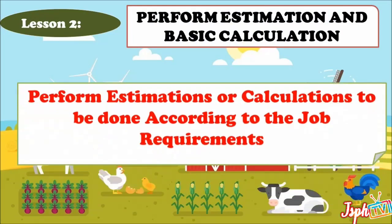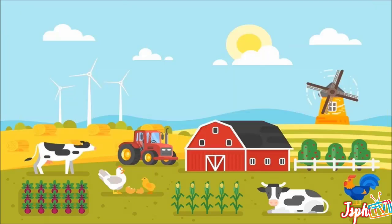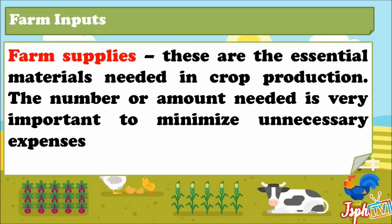Let us proceed with farm estimations or calculations to be done according to job requirements. Farm Inputs — Farm Supplies: these are the essential materials needed in crop production. The number or amount needed is very important to minimize unnecessary expenses.